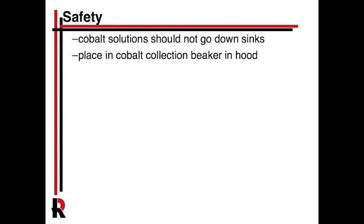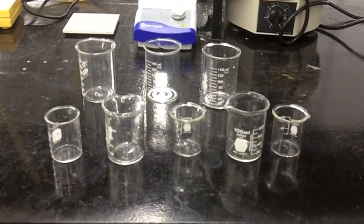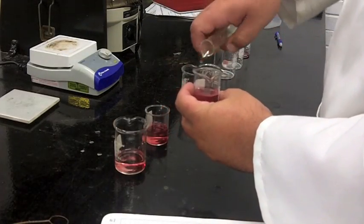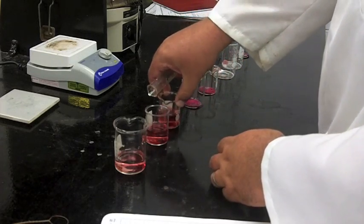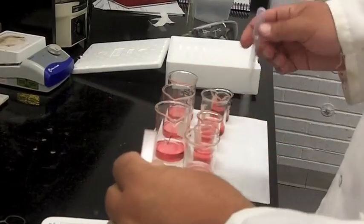Safety-wise, there's really no hazard to humans, but don't put cobalt down the sink. We'll have a cobalt solution collection beaker in the hood — dump it in there and we'll handle disposal. The main complication is keeping your eight solutions organized; figure out a system amongst yourselves. Add 25 mL of water to each one, stir carefully without spilling, and remember to add sodium chloride to the last three unknown solutions. Then use a transfer pipette to load the sample into the spectrophotometer, and we'll show you how to do that.